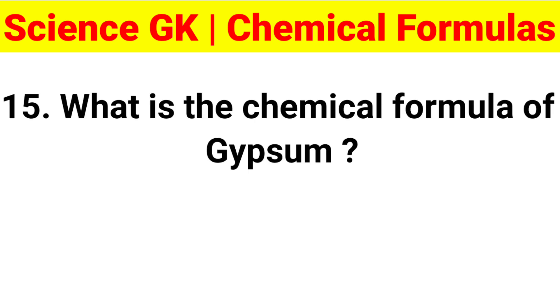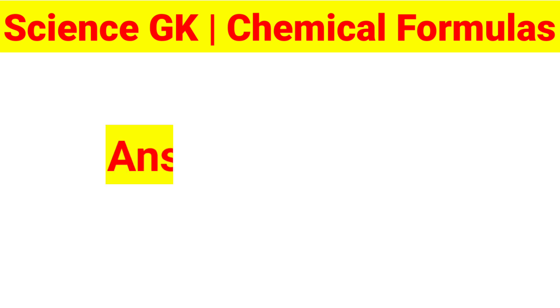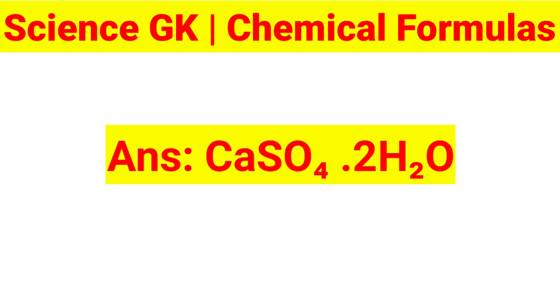Question 15: What is the chemical formula of gypsum? Answer: CaSO4·2H2O.